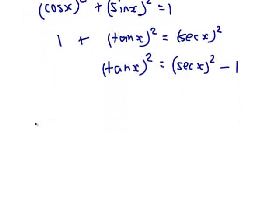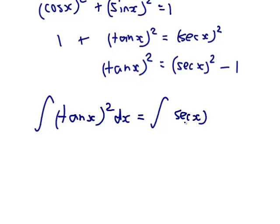So, the integral of tan x squared dx is the integral of sec x squared minus 1 dx. So, the integral of sec squared is just tan x. The integral of minus 1 is just minus x.